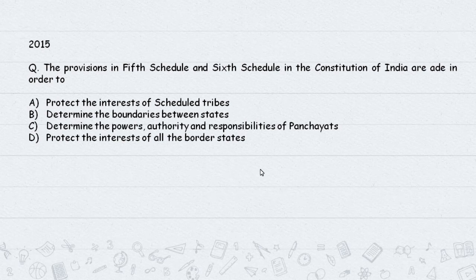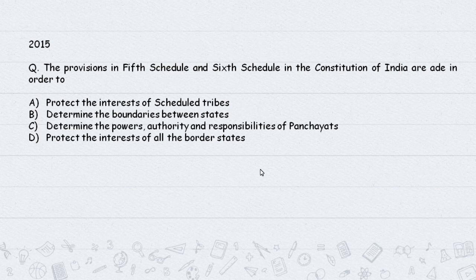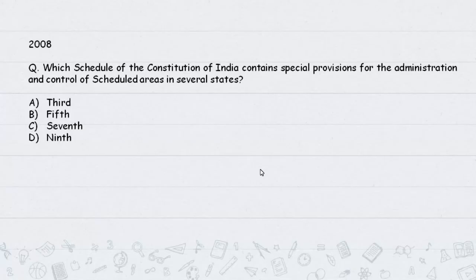Question: Provisions in the Fifth and Sixth Schedules of the Constitution of India are made in order to - options: (a) protect the interests of Scheduled Tribes, (b) determine boundaries between states, (c) determine powers and authority, (d) responsibility of Panchayats in the Eleventh Schedule. Fifth and Sixth Schedules cover administration of scheduled areas and scheduled tribes.